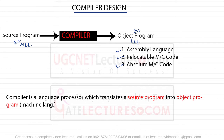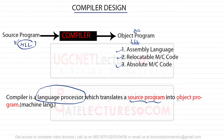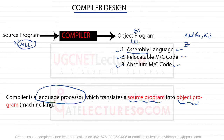The key point is that a compiler is a language processor - it processes a language, translating a source program into an object program, which can be an assembly language program, relocatable machine code, or absolute code. Assembly language includes instructions like ADD R0, R1 or JNZ (jump if non-zero) - these are instructions in assembly language.